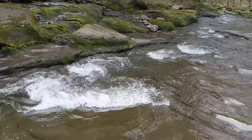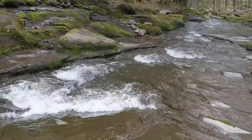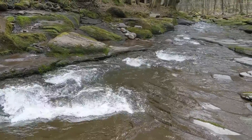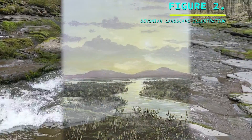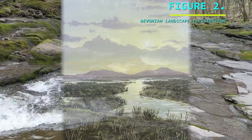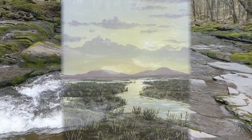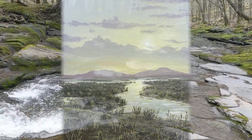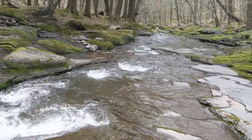A few hundred million years ago, where this narrow brook flows today, there existed wide floodplains and winding rivers. These ancient rivers flowed to a wide-spanning delta where multiple wandering rivers flowed to sea.